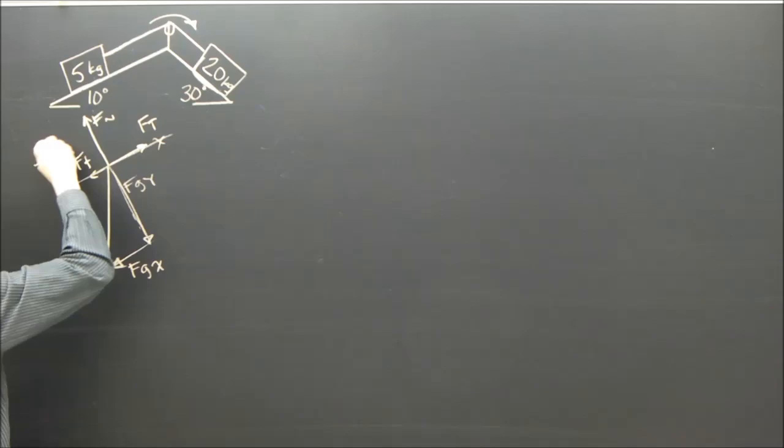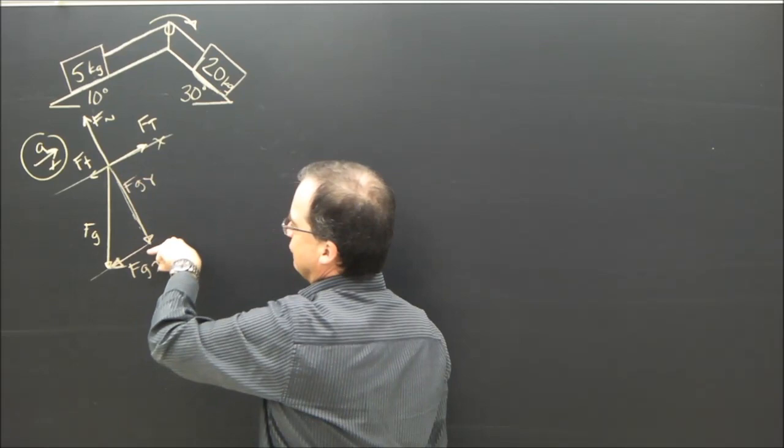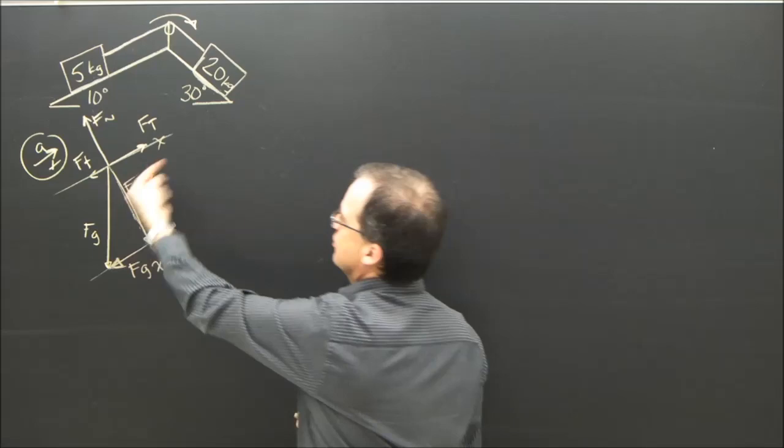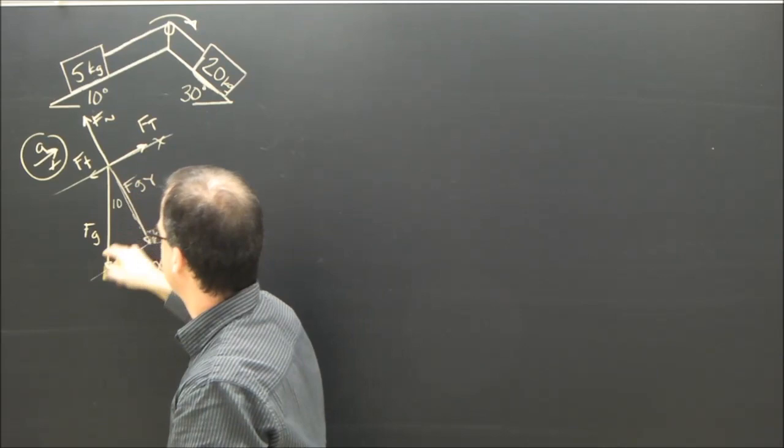Which way is it accelerating? It's accelerating to the right. So for this diagram, this way is positive. So the forces that are important, what are they? Ft is pulling the box that way. Fgx is trying to hold it back. And force of friction is trying to hold it back. So I've got this forward and these two backwards. So here's my free body diagram. This angle here is 10 degrees.